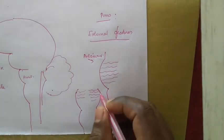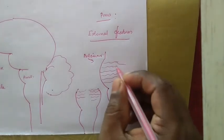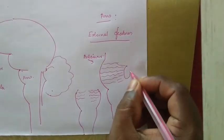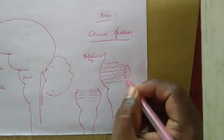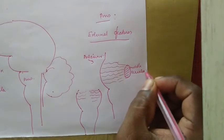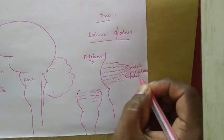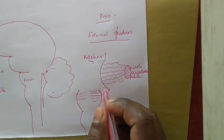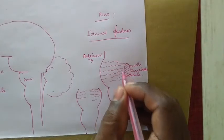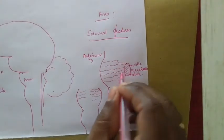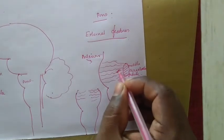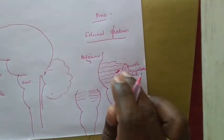These transversely running fibers will end in the middle cerebellar peduncle. Just medial to the middle cerebellar peduncle, we have the origin of the trigeminal nerve.